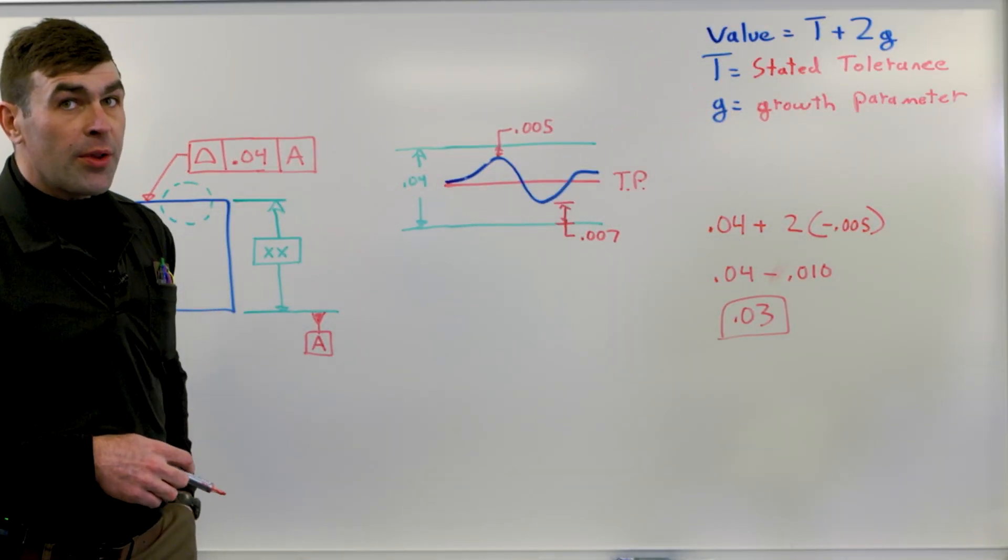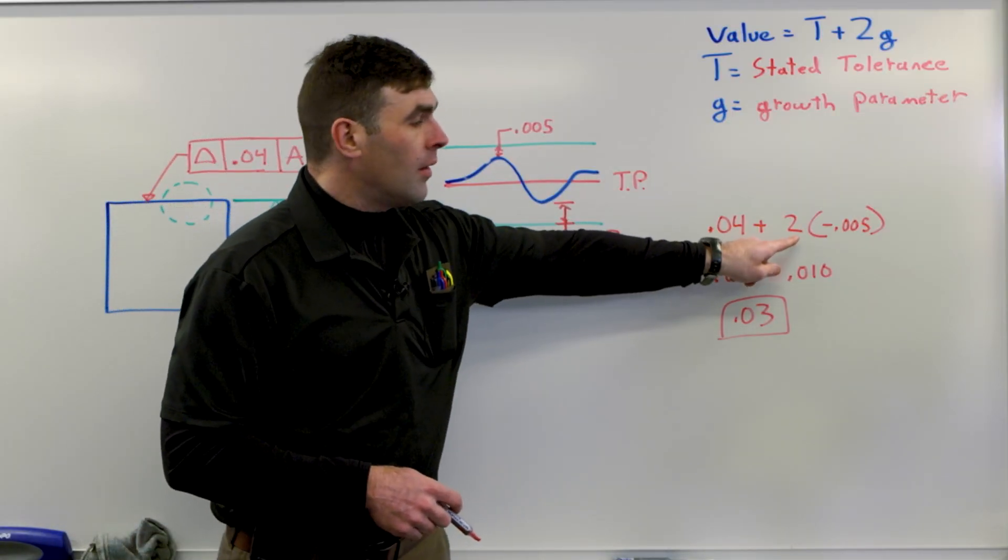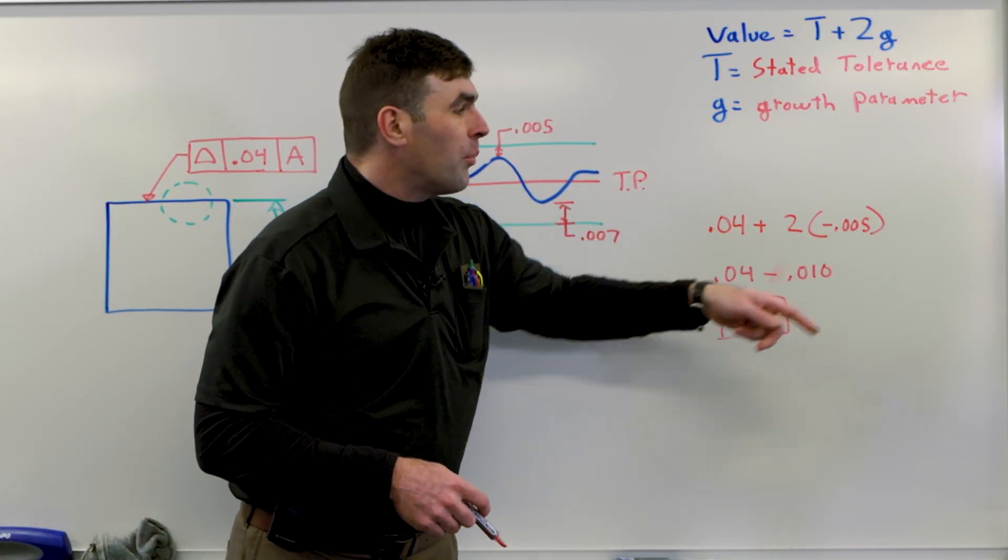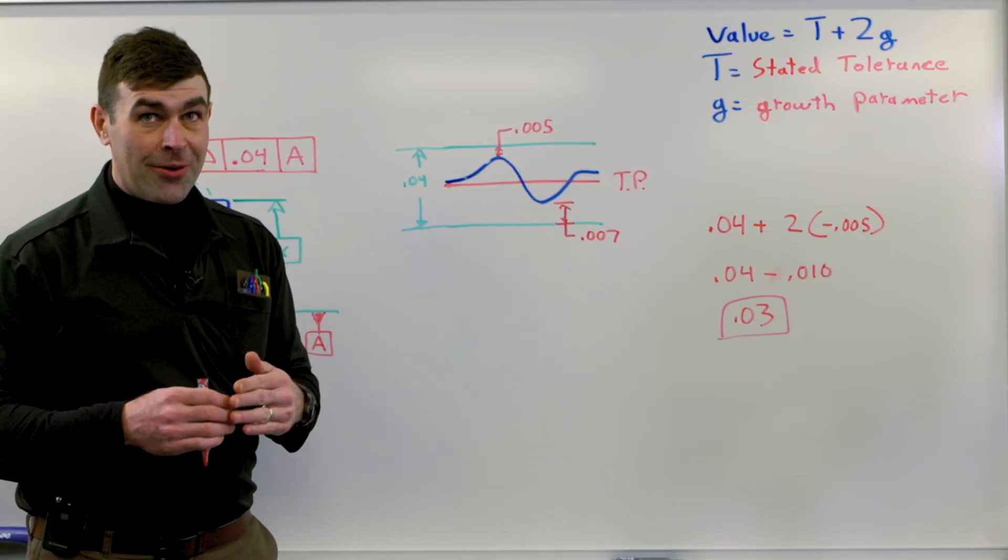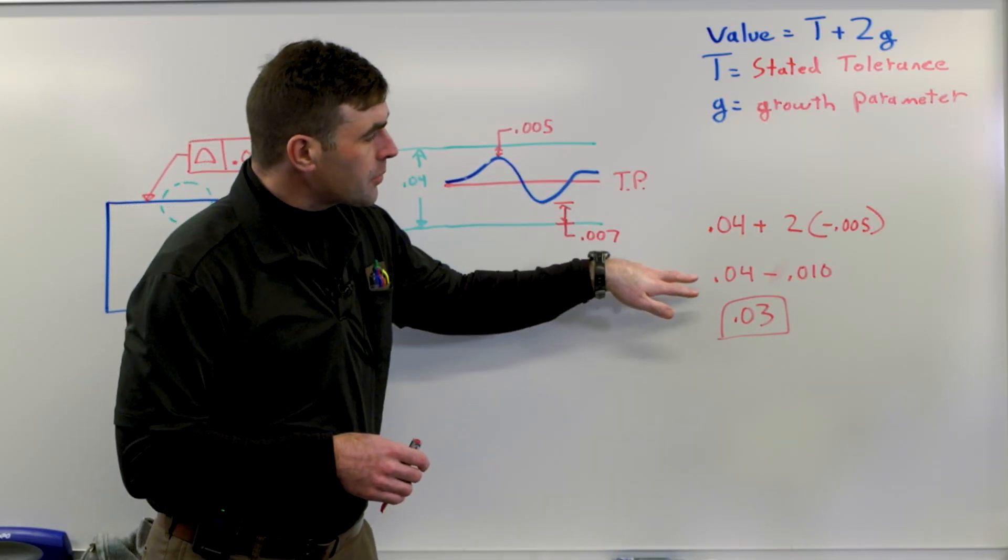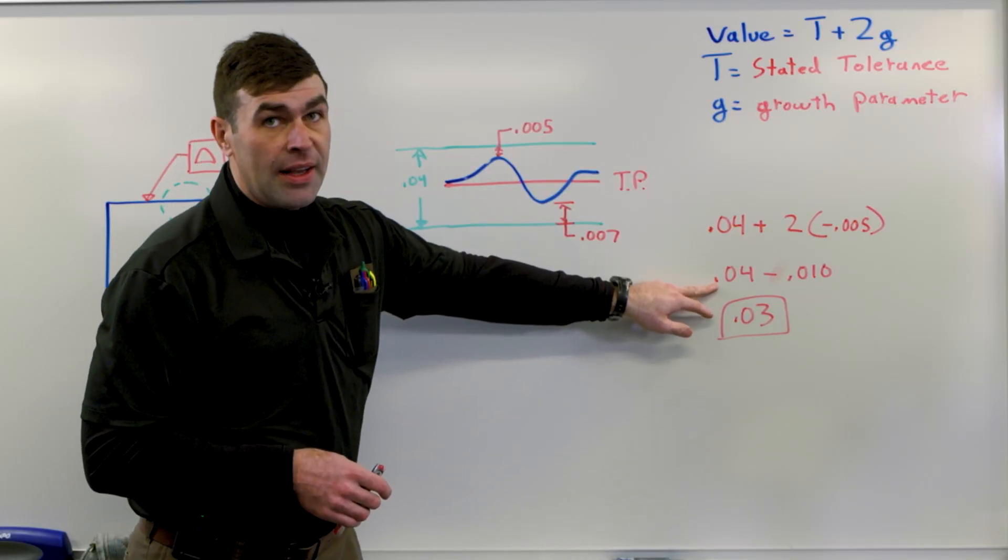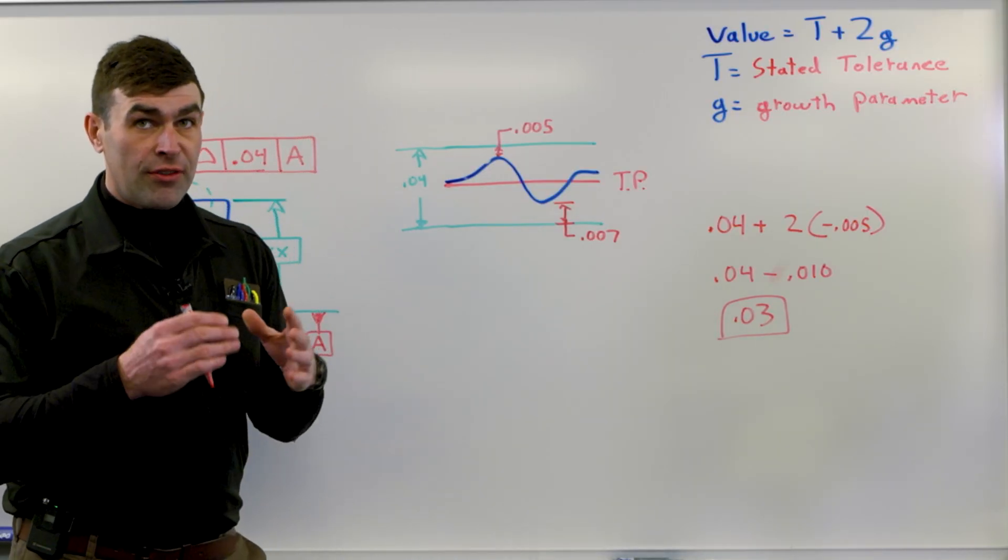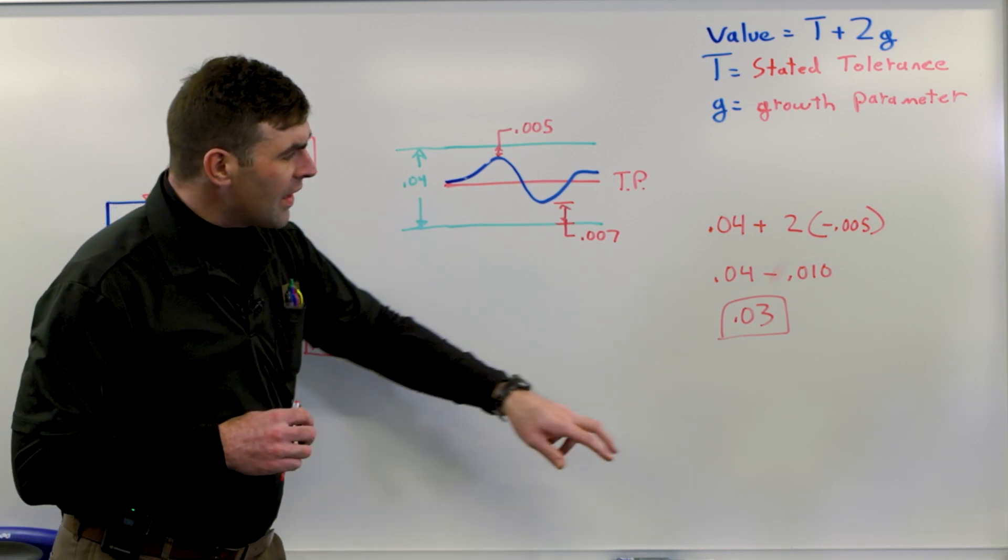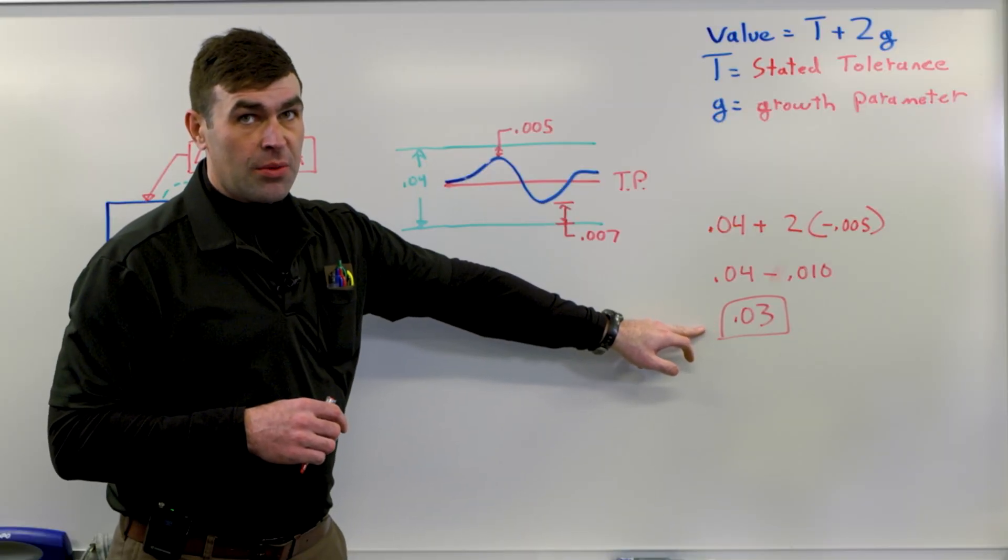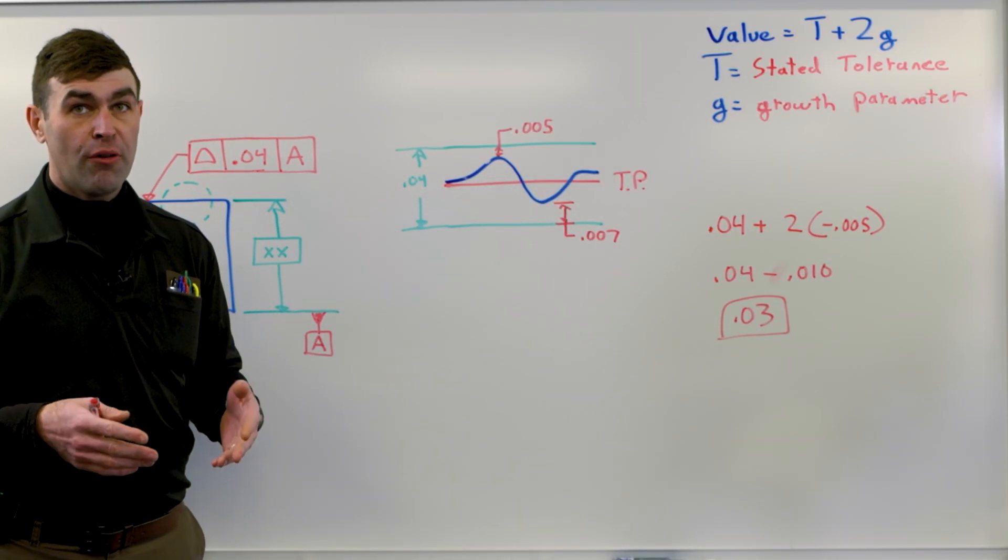So here's our calculation: our stated tolerance, what's in the feature control frame, plus two times the growth parameter. Now, if it's inside of the boundary, it's negative. So what this does is it's always going to be smaller than the stated tolerance if it's inside of the tolerance zone boundary. In this case, we've got thirty thousandths, right? That would be what gets reported as the profile.